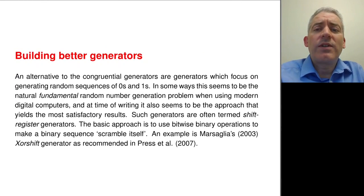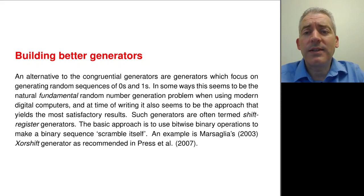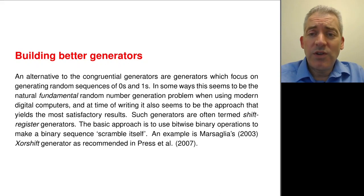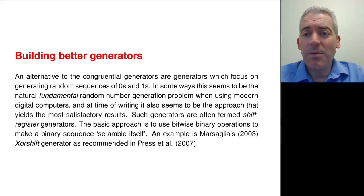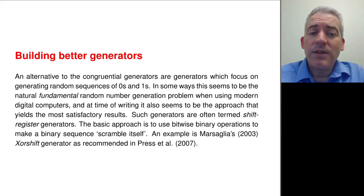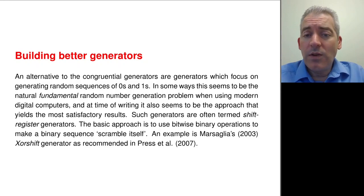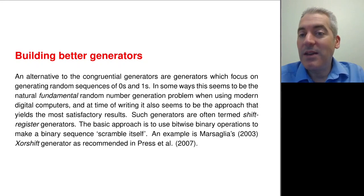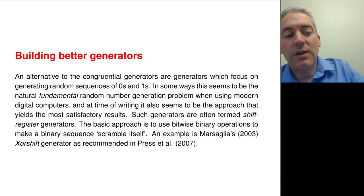So how can we build a better generator? One approach is to move away from generating a sequence of integers and instead switch attention to generating binary sequences, because at the end of the day computers work with binary sequences anyway. We could focus on a so-called bit stream of zeros and ones and think about how to generate a random bit stream. There are lots of bit stream generators; we'll look at a class called shift register generators. The idea is an extension of linear congruential generators - you take a sequence of bits and shuffle them around in a way that appears random. It's a set of deterministic rules again, but they appear random. Let's look at the XOR shift generator.